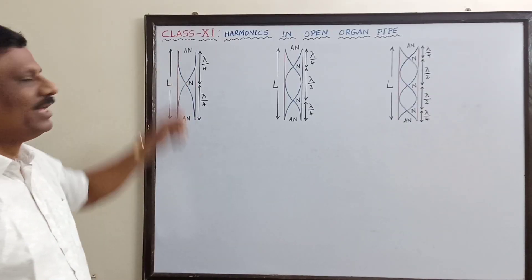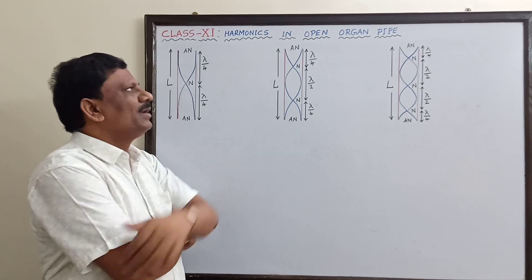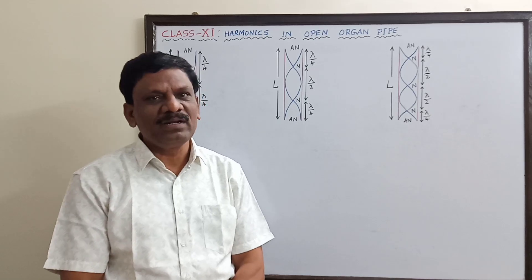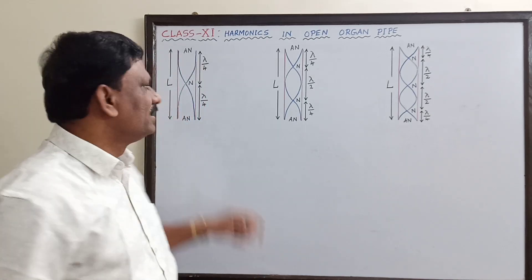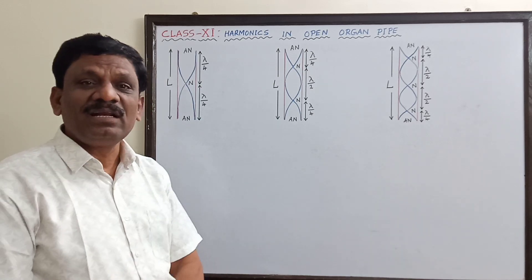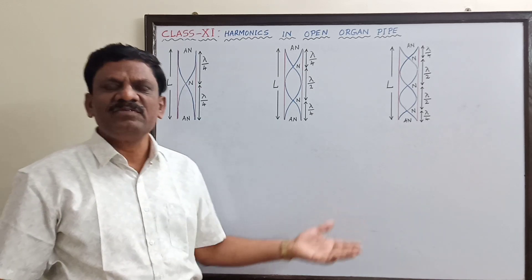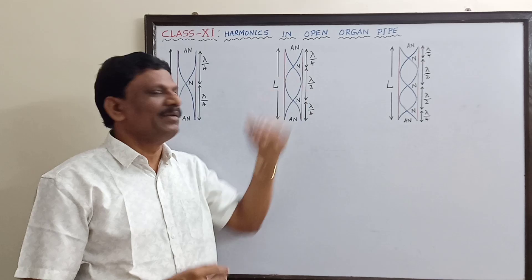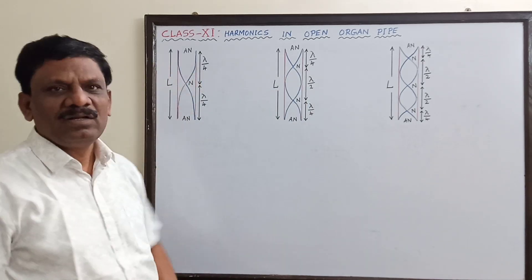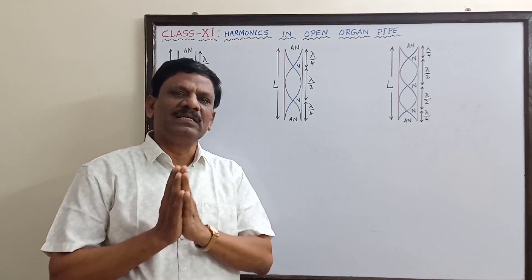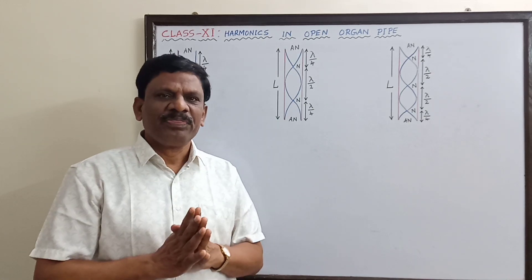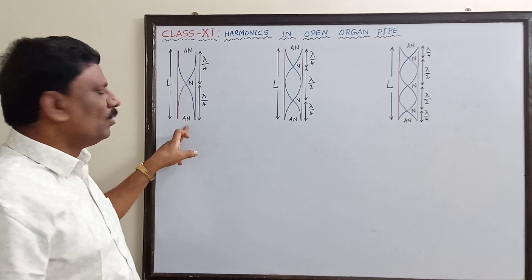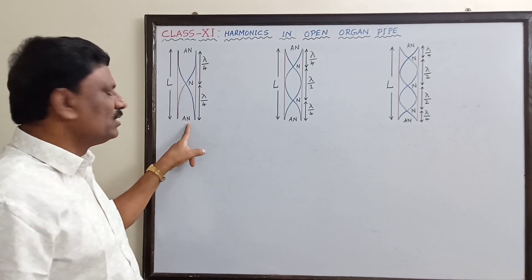We are going to discuss the formation of harmonics in an open organ pipe. An open organ pipe is a cylindrical pipe whose both ends are open. Unlike the closed organ pipe where one end must be closed, here both ends are open. When stationary waves are formed, the condition is that at the open end an antinode should be formed. Since there are two open ends, antinodes should be formed at both ends.